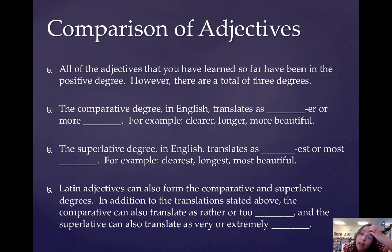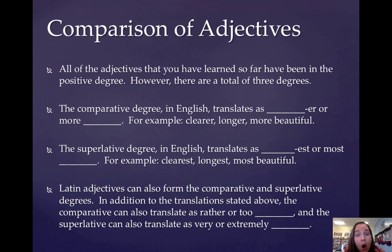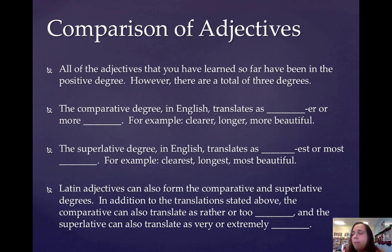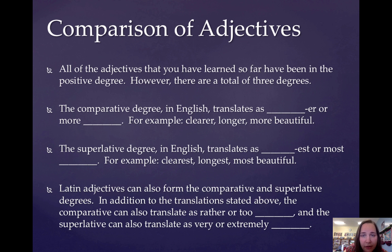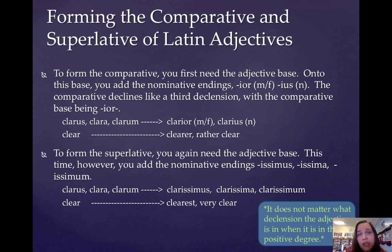Latin adjectives can also form the comparative and the superlative degrees, just like English adjectives can. The comparative degree can translate as blanker or more blank, or it can translate as rather whatever — so clearer, rather clear, or sometimes even too clear. The superlative can translate as blankest or most blank, or it can translate as very or extremely blank. So using clear as our example: clearest, or very clear, or extremely clear are all suitable translations.